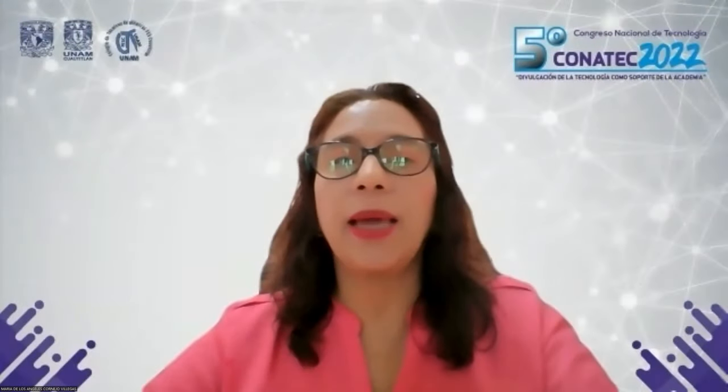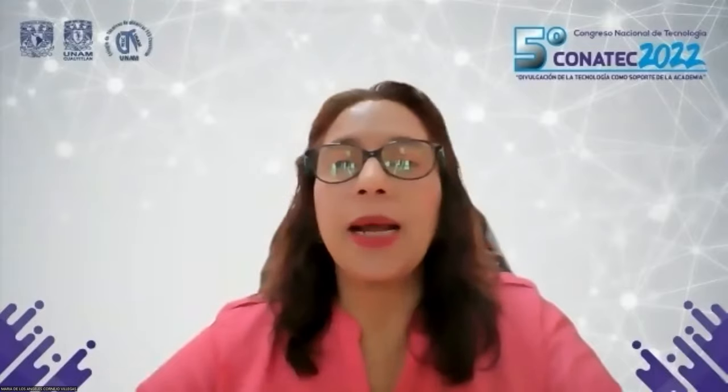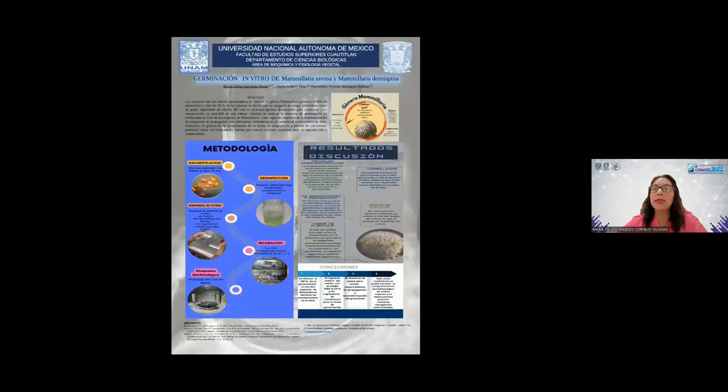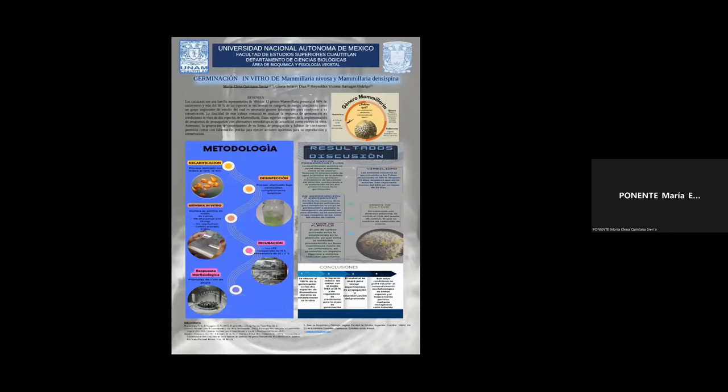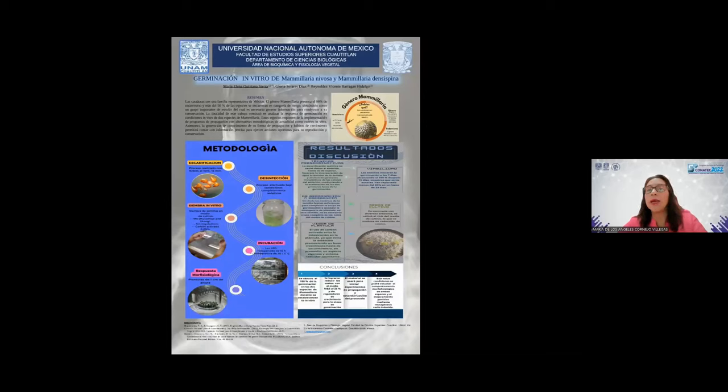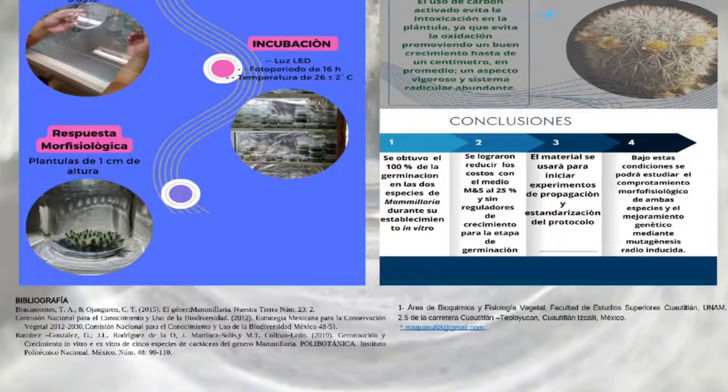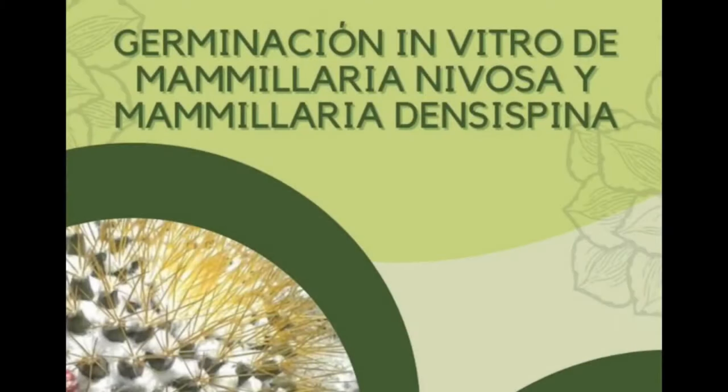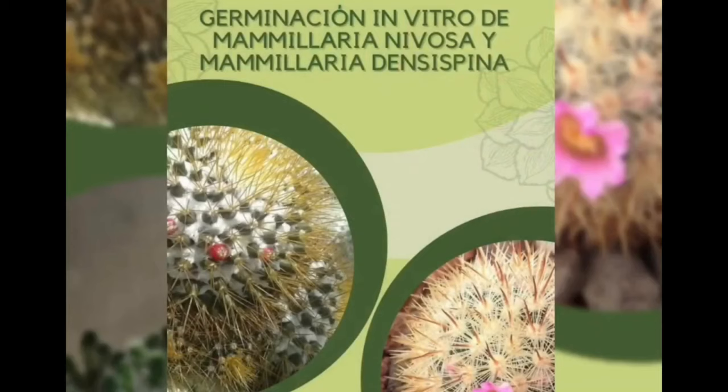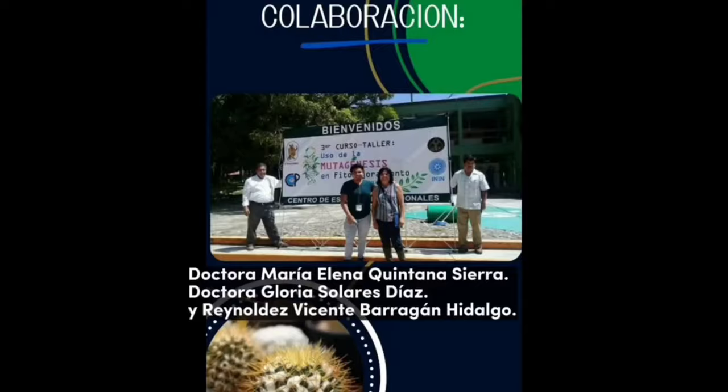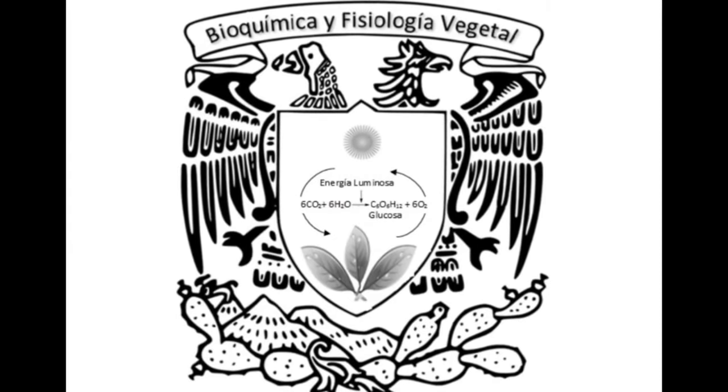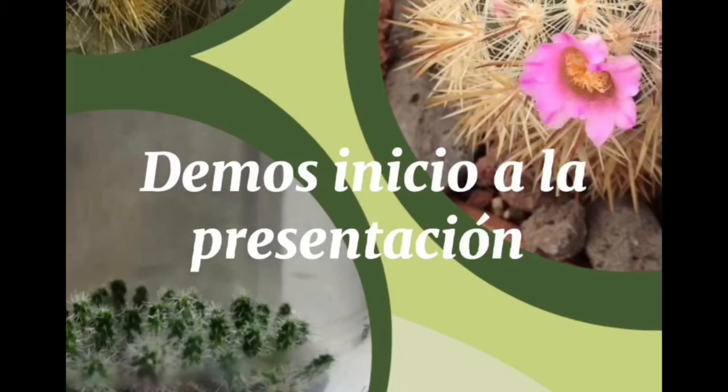Pasamos al siguiente cartel. Estarán María Elena Quintana Sierra, Gloria María Solares Díaz y Reynoldes y Vicente Barragán Hidalgo con el título Germinación in vitro de Mammillaria nivosa y Mammillaria decipiens. Adelante, por favor. Hola, buen día. El trabajo se titula Germinación in vitro de Mammillaria nivosa y Mammillaria decipiens. Colaboraron en este trabajo Gloria Solares, Reynoldes Barragán y María Elena Quintana del Área de Bioquímica y Fisiología Vegetal de la Facultad de Estudios Superiores Cuautitlán. Demos inicio a la presentación.